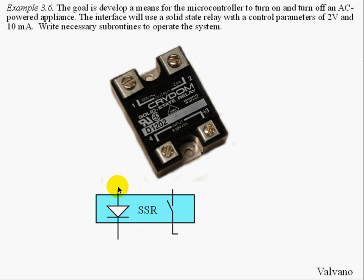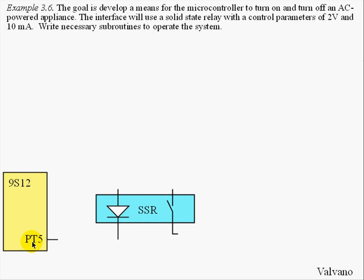And if no current flows through this diode, then the switch will be open and no power can be applied. In order to connect the relay to the microcontroller, we will interface this LED to the computer. I have chosen to use PT5 for this solution, but I could have used any of the output pins on the 9S12.